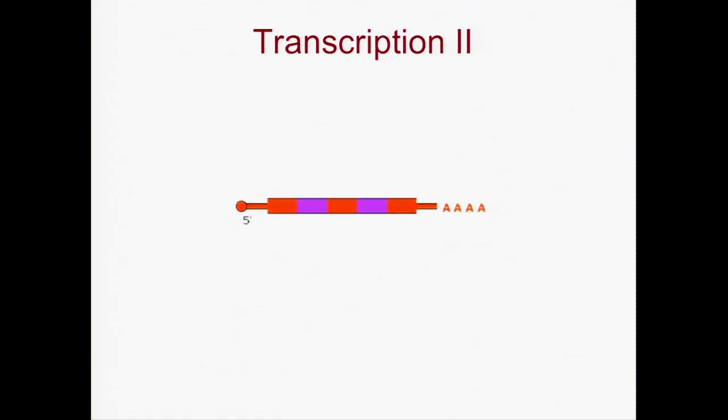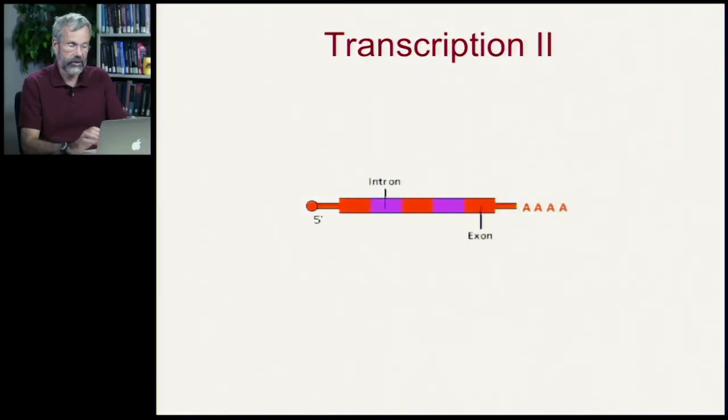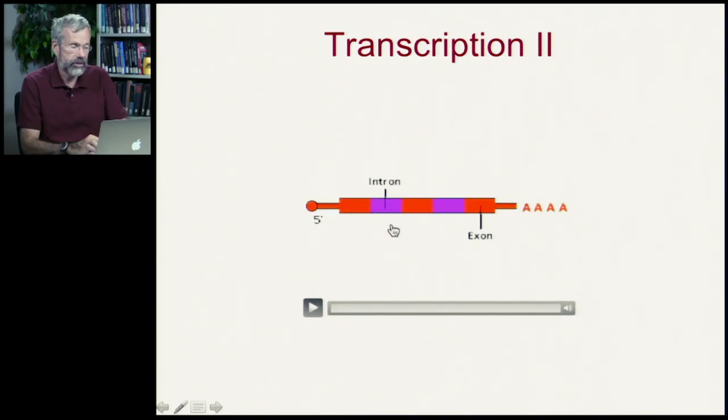Some pre-mRNAs contain coding regions called exons, as well as non-coding regions called introns. Okay, again, there's a number of details that we don't have to worry about. But I do want you to remember, because this will come up again later in the course, that we have some regions here in the messenger RNA, or the pre-messenger RNA, that are going to have to be excluded.